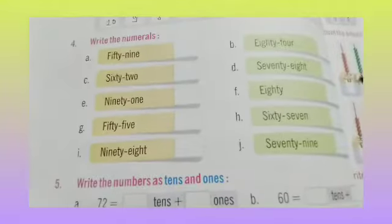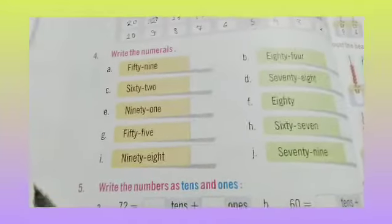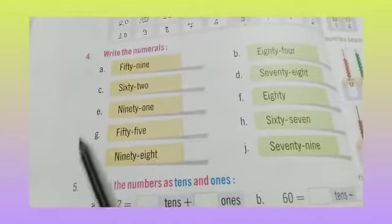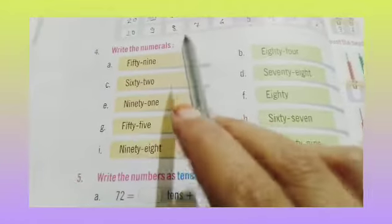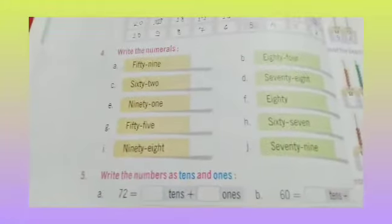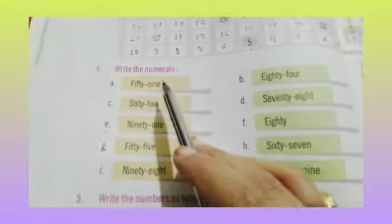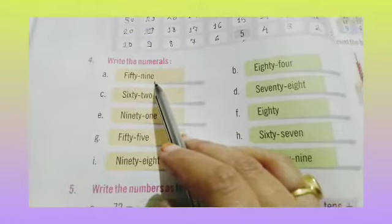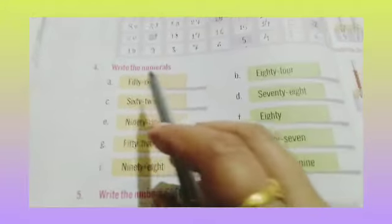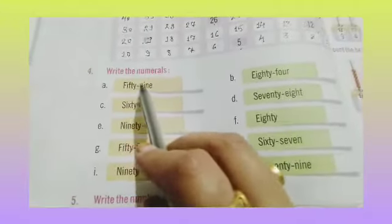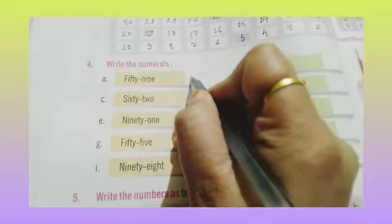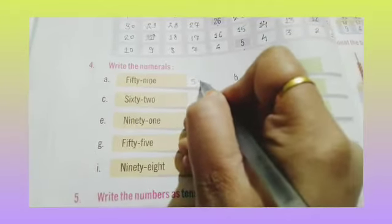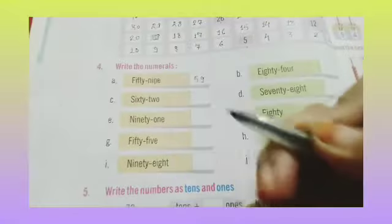Good morning everyone. Welcome back to our maths class. Dear children, today we are going to do question number 4 — write the numerals on page number 58. So part A: 59. We have to write the numbers. So 50 and 9. 50 plus 9 is 59. Okay children?